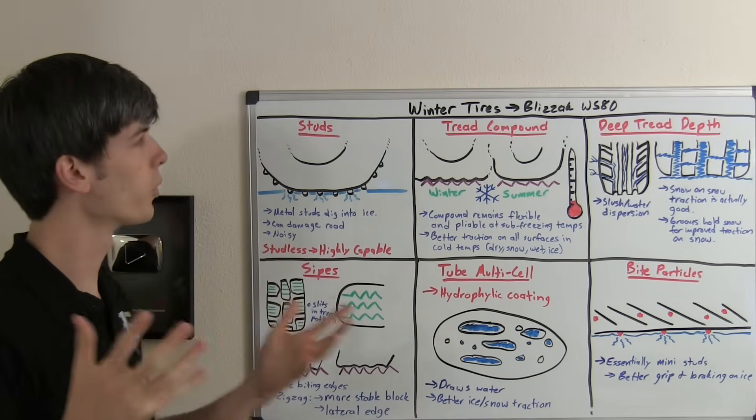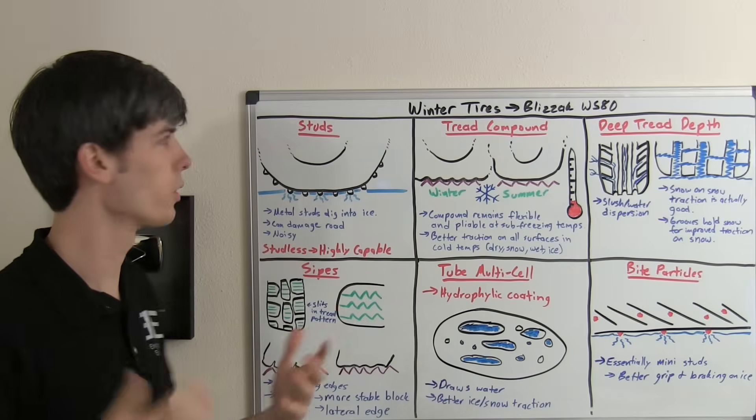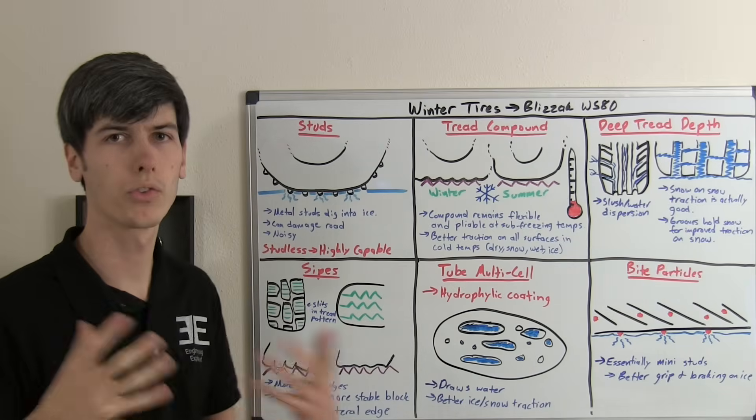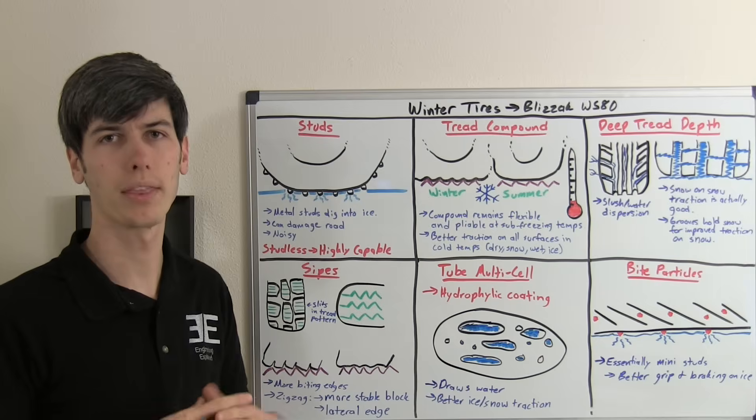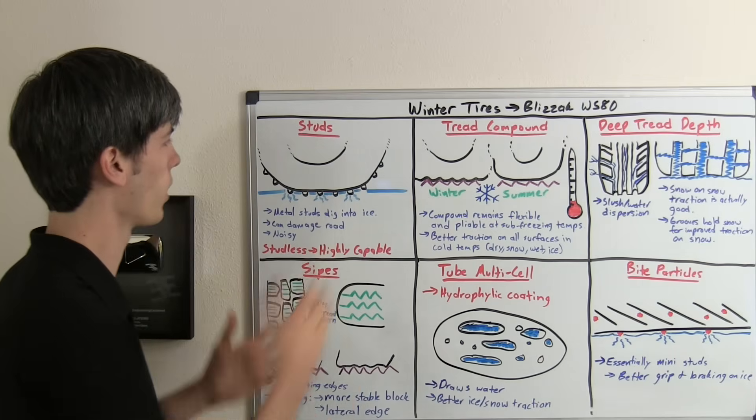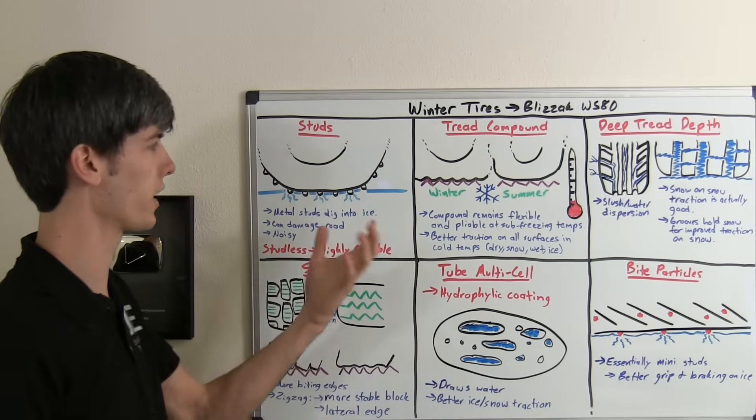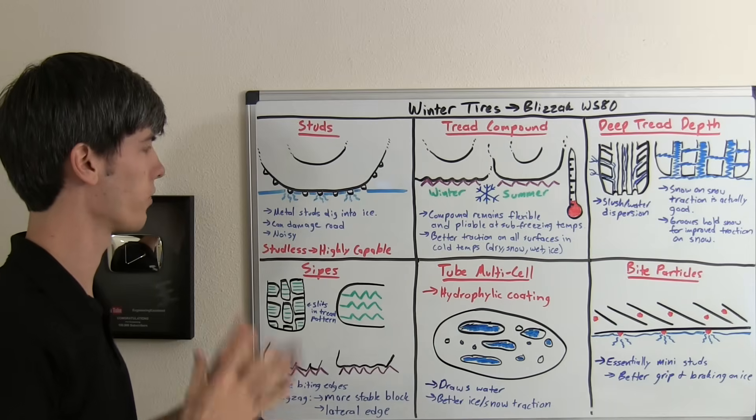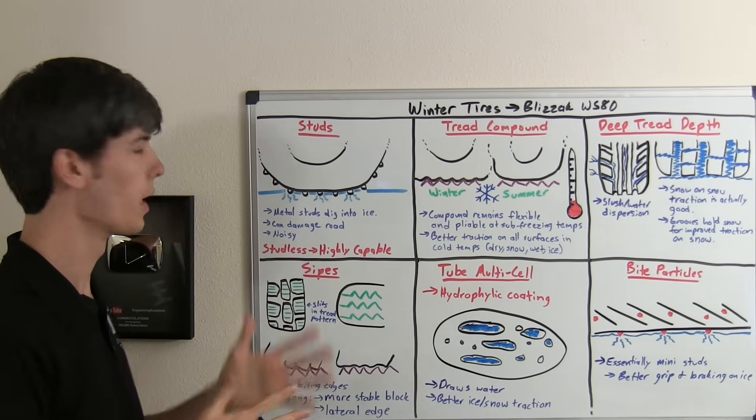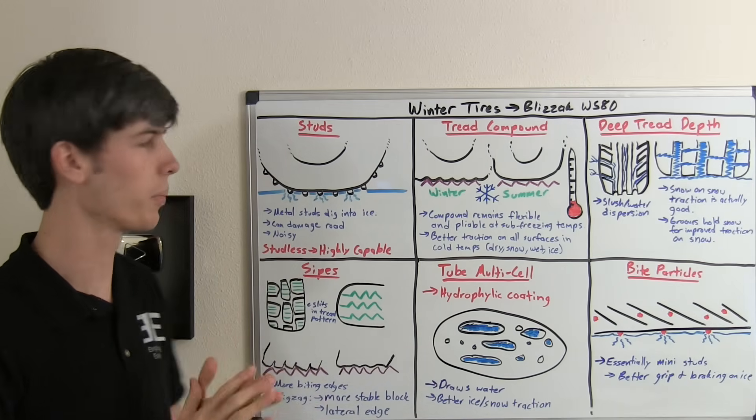The first method of improving winter traction, and one of the more traditional methods, is studded tires. Studded tires literally have metal studs embedded within the tread of the tire, and this helps increase traction as the metal studs dig into the ice as it's driving over it. Fairly simple idea and easy to understand, but it can damage the road and they're also pretty noisy.